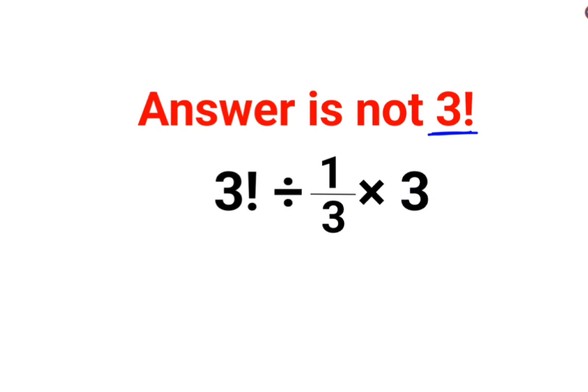It's very important for you all to realize that whenever you have division and multiplication, both of them hold equal precedence. So in sums like this, you just have to go from left to right.